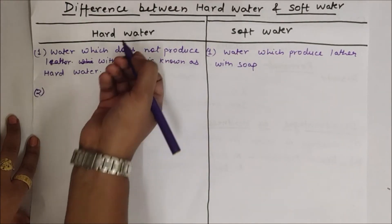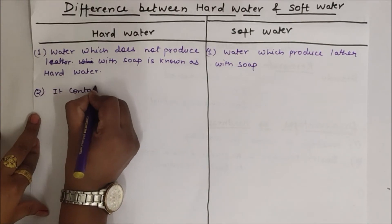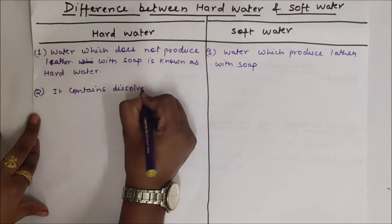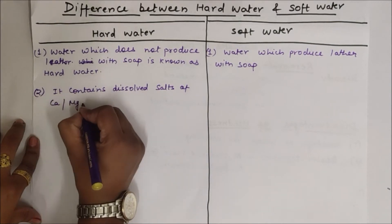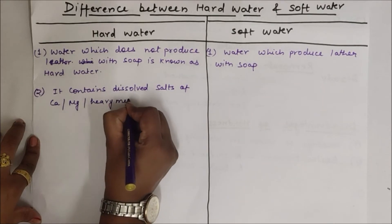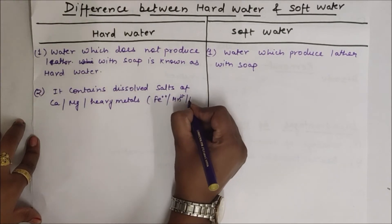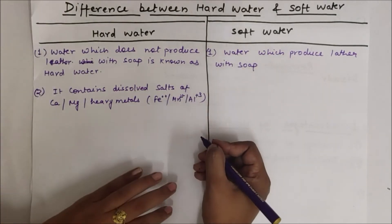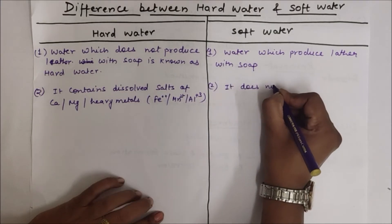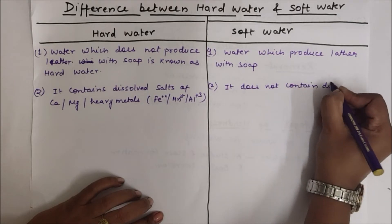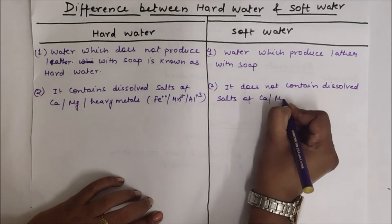Hard water contains dissolved salts of calcium, magnesium, or heavy metals like iron, manganese, and aluminium. Soft water does not contain dissolved salts of calcium and magnesium.